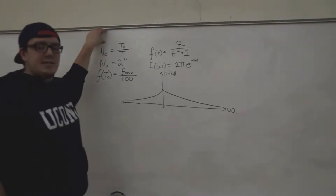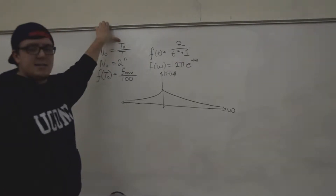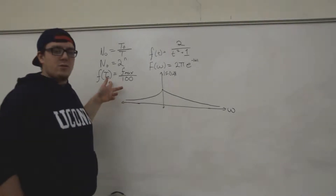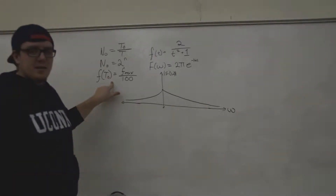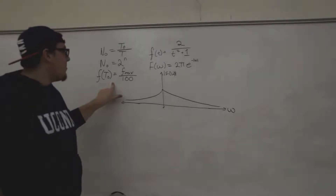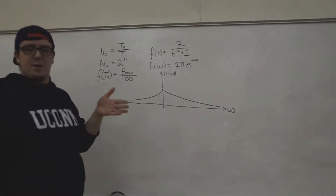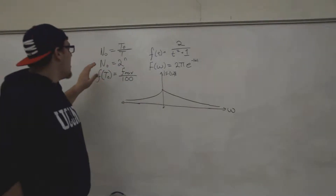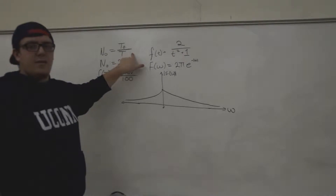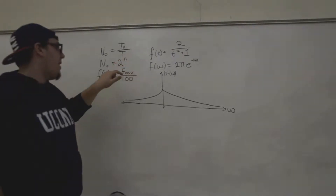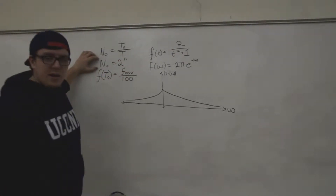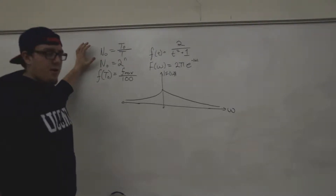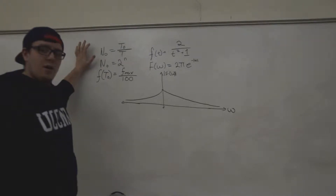We're looking for N0, which is given as t0 divided by T — where t0 is the time for which the function reaches 1% of its maximum value. We call that the length of the function, because that's about the time we cut off and say the function is essentially zero from then on. N0 must also be a power of 2, so we're going to find N0 and T that closest match our criteria.